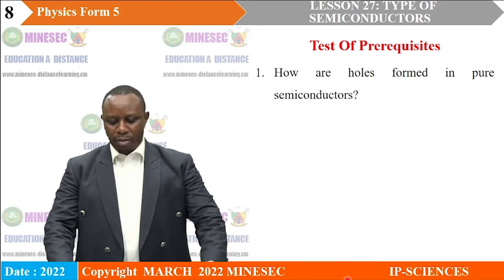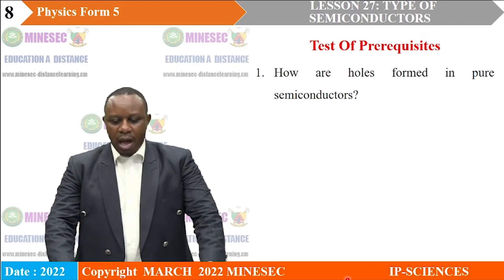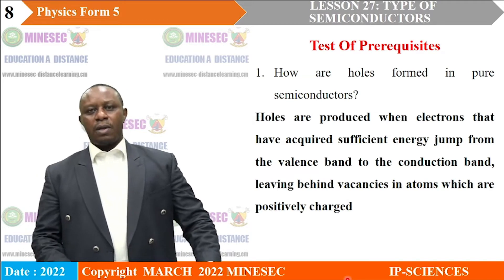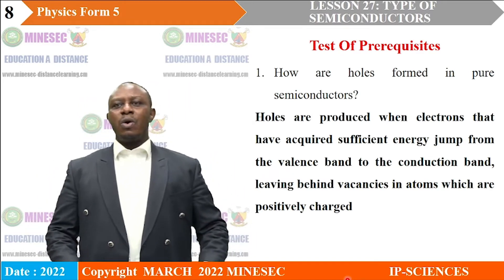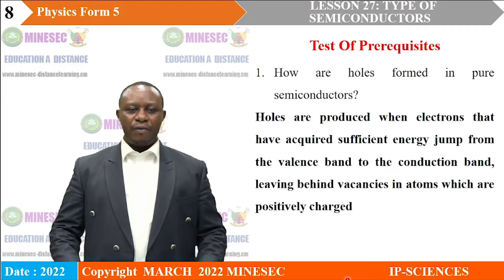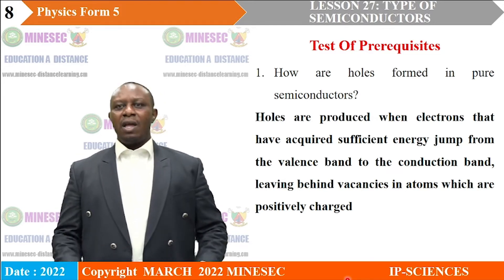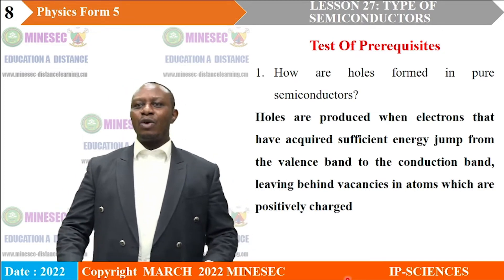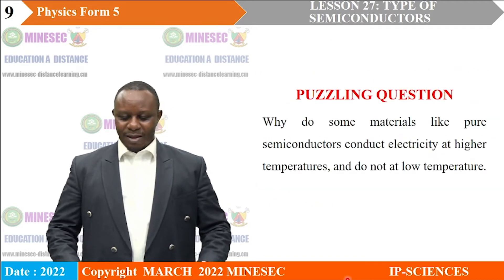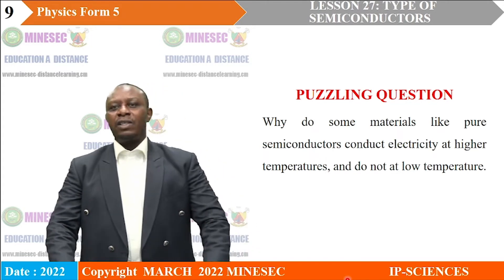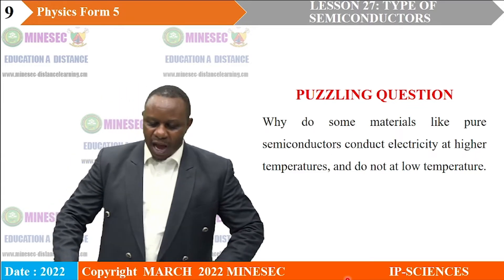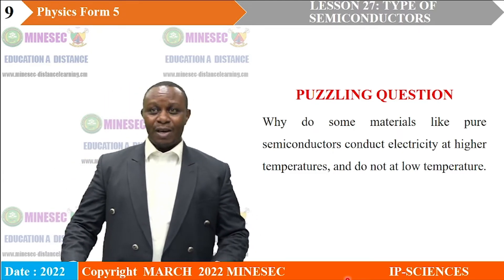To understand this lesson properly, we will make use of knowledge learned previously under conduction in pure semiconductors. Let's remind ourselves: how are holes formed in pure semiconductors? Holes are produced when electrons that have acquired sufficient energy jump from the valence band to the conduction band, leaving behind vacancies in atoms which are positively charged. We should also ask ourselves why pure semiconductors conduct electricity at higher temperatures but not at low temperatures.